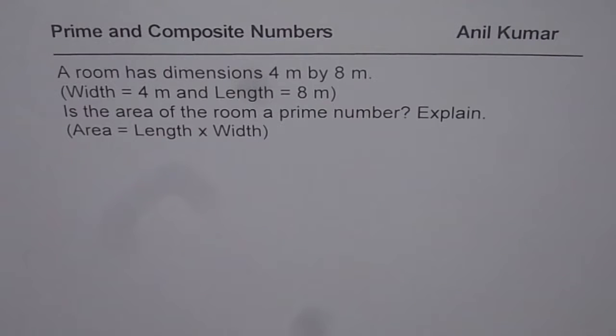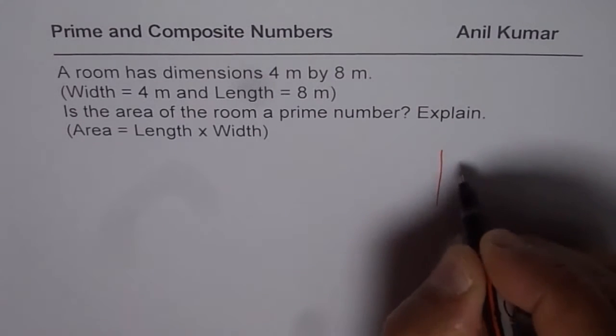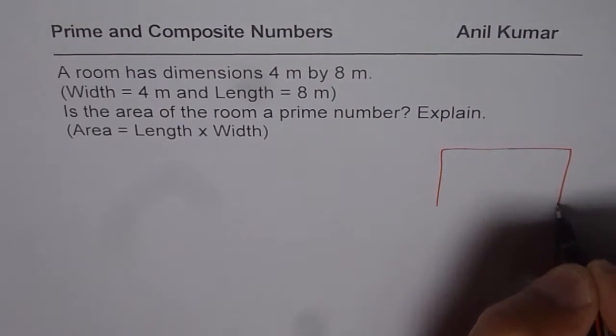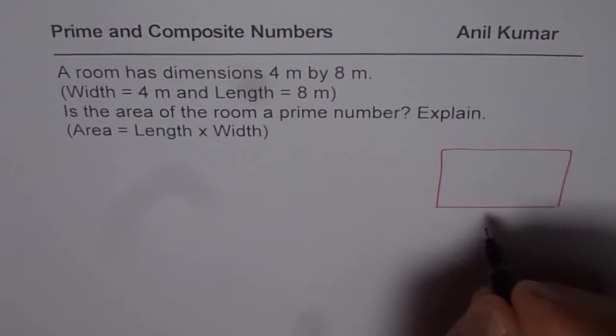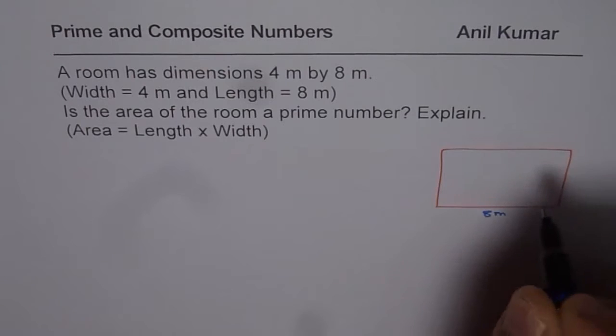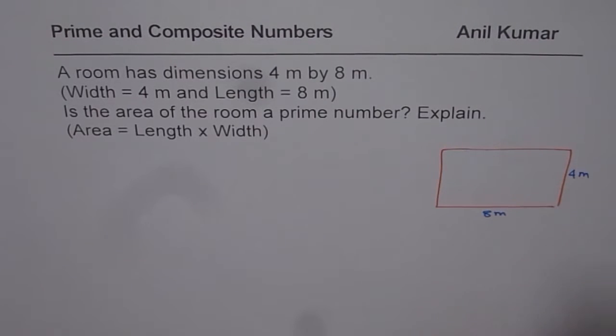Now when we say that the room has dimensions of 4 meters by 8 meters, we really mean that the width of the room is 4 meters and length is 8 meters. Let me sketch one for you. It is a rectangle with length of 8 meters and width of 4 meters. Normally, the smaller dimension is taken as the width and the longer one as the length.